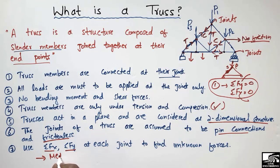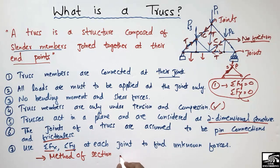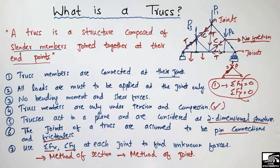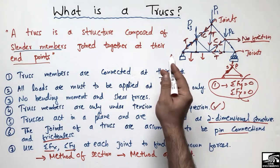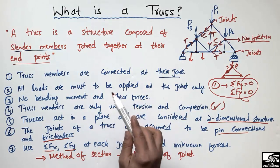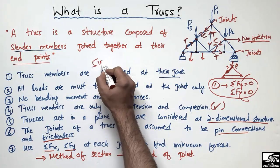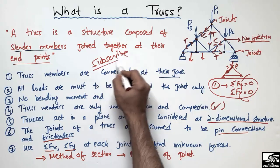There are two main methods to solve truss problems: the method of sections and the method of joints. Both methods will be discussed in the next lecture. Hope you guys understand what is a truss structure and what are the important points to consider while solving truss-related problems. Don't forget to subscribe to the channel. Thank you for watching.